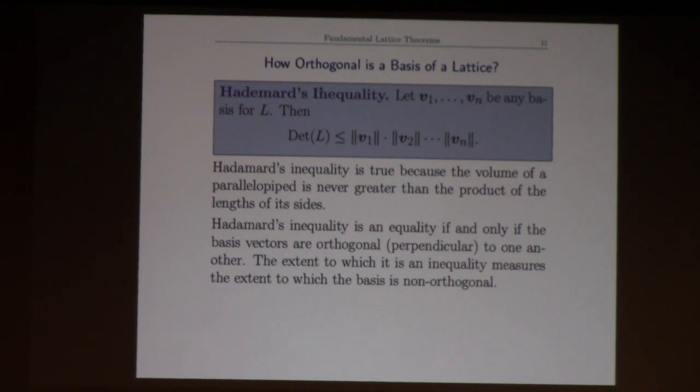It's an equality if and only if the vectors are perpendicular, the basis vectors. It is not true that every lattice has a basis consisting of vectors that are perpendicular to each other. The one I had up at the beginning with the parallelogram doesn't have any pair of vectors that are perpendicular to each other, other than the zero vector.